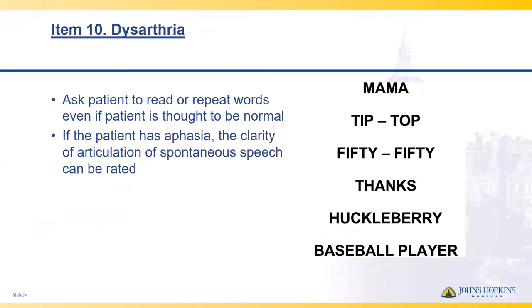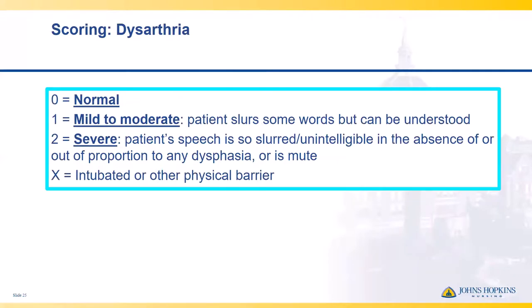Item ten is dysarthria — looking at the clearness with which the patient is talking. Ask the patient to read another stroke card. If the patient has aphasia, look at the clarity of articulation of their speech. Normal speech earns no points. Mild to moderate dysarthria — they slur some words but you can understand them — earns one point. Severe dysarthria — speech so slurred and unintelligible, out of proportion to any dysphagia, or the patient is mute — earns two points. If the patient is intubated or has any other physical barrier from communicating, no points are given.